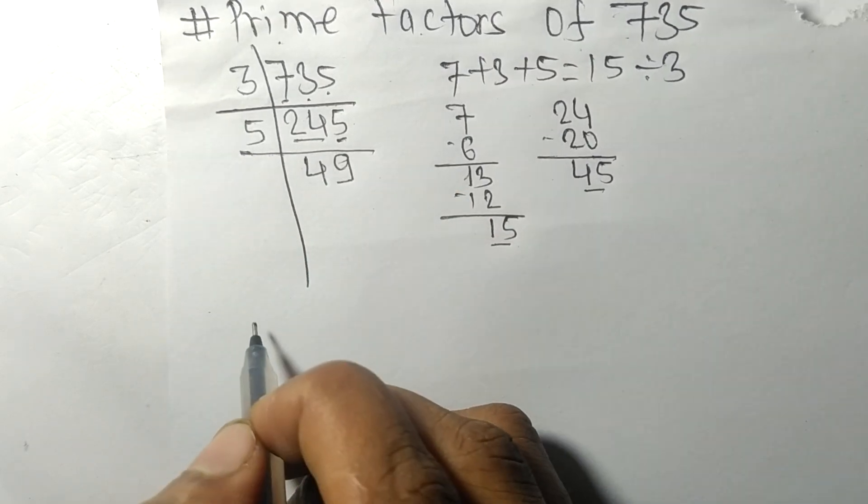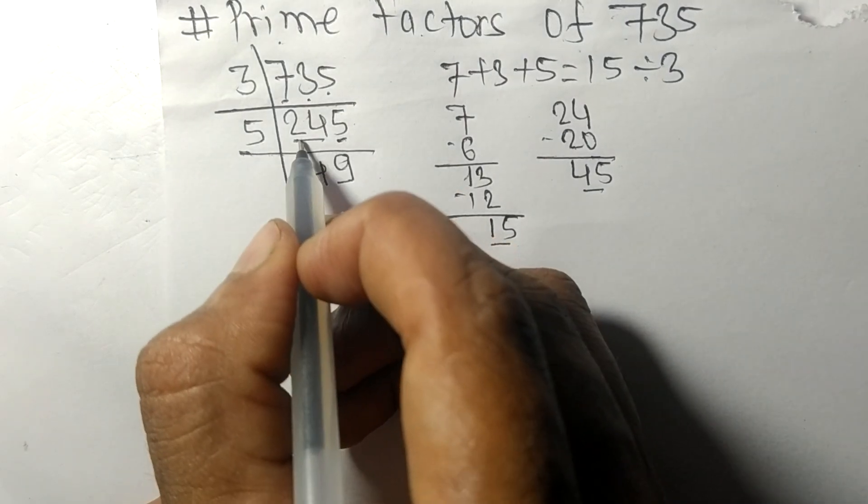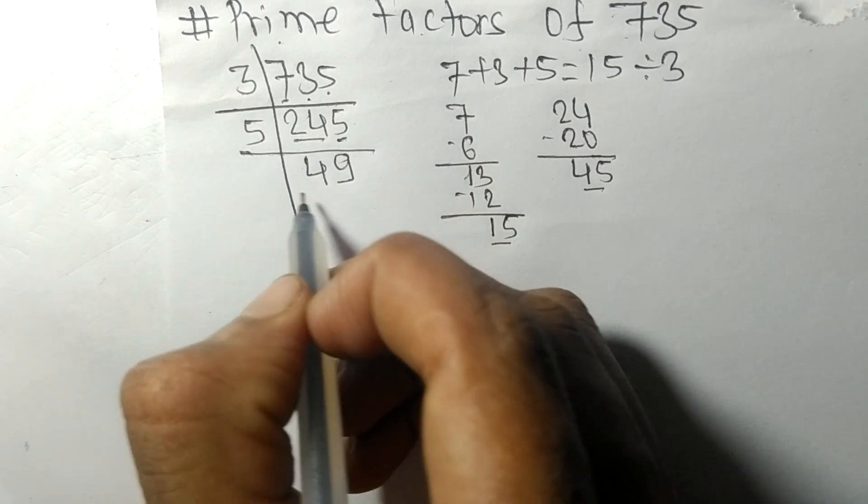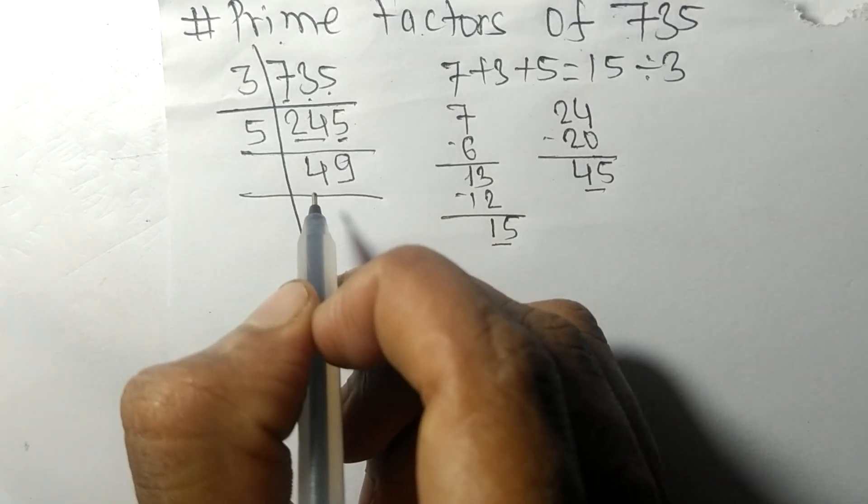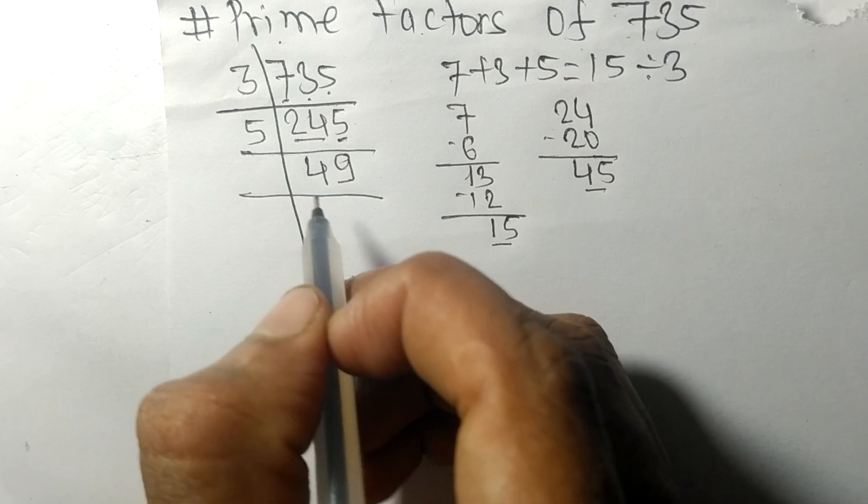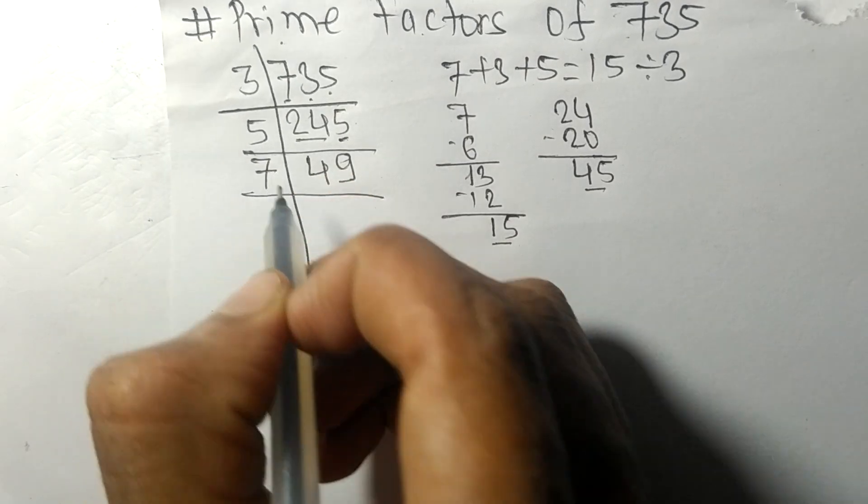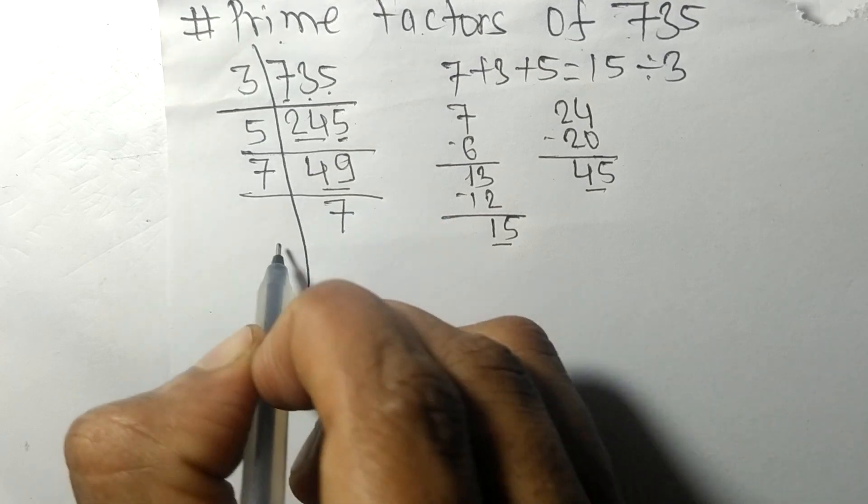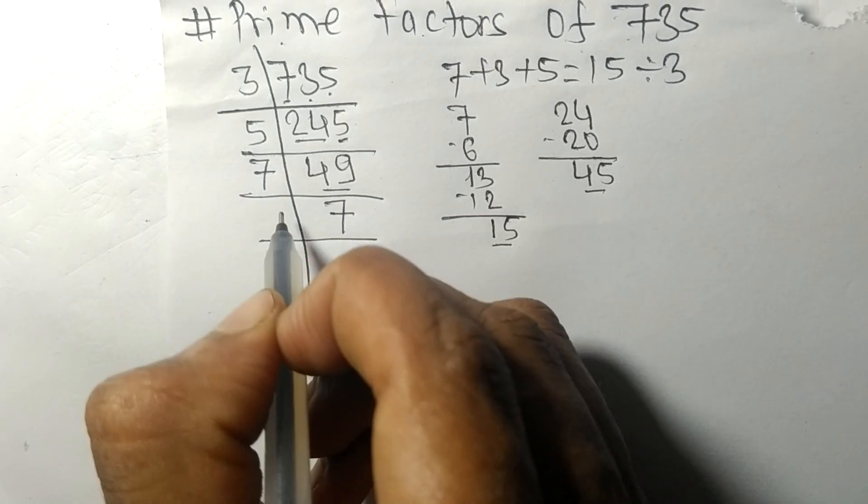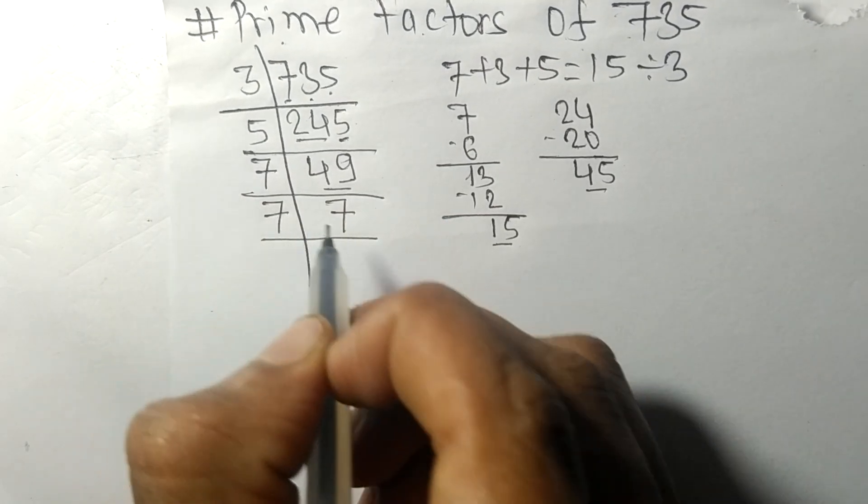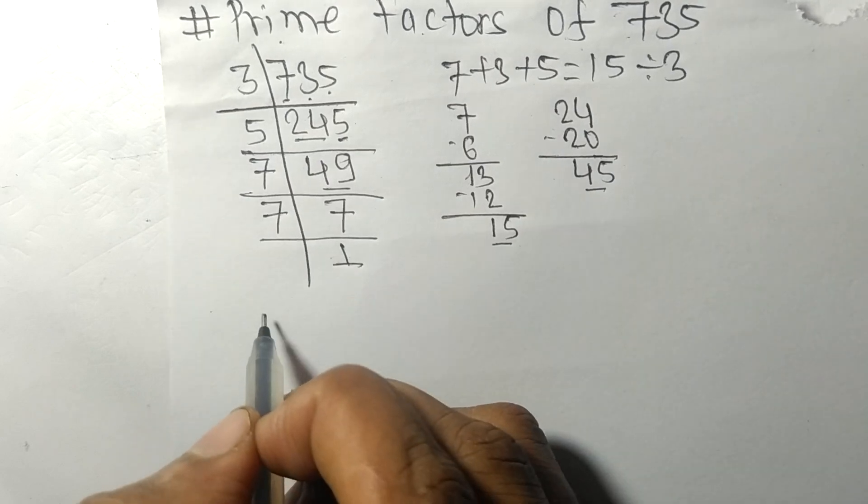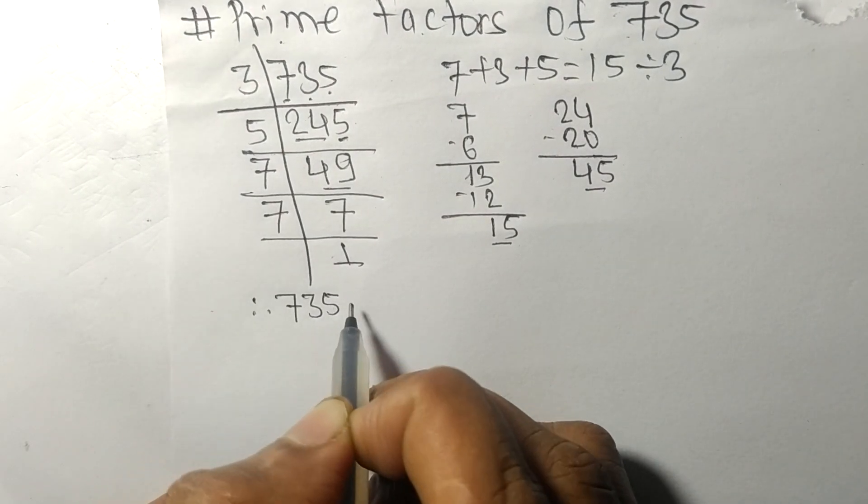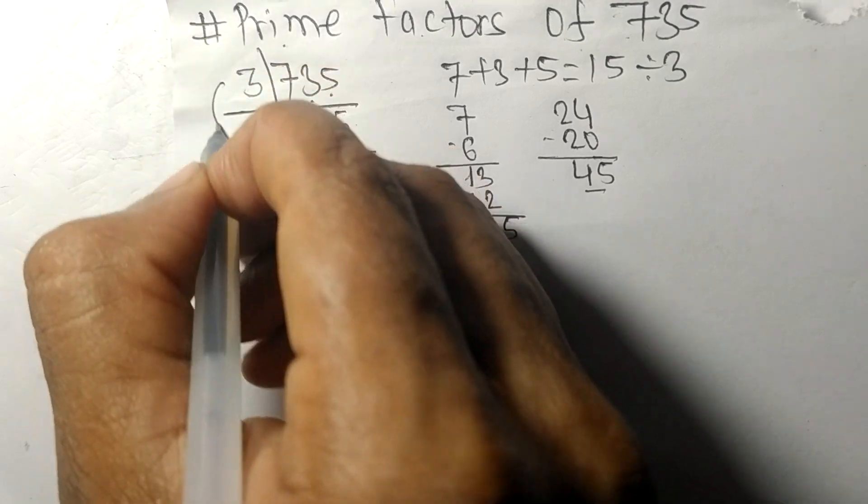On dividing 245 by 5 we got 49. Now 49 is exactly divisible by 7—7 times 7 means 49. And 7 divided by 7 gives 1. Therefore, 735 equals 3 times 5 times 7 times 7.